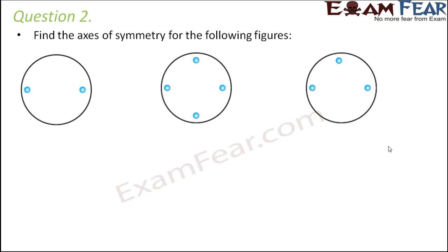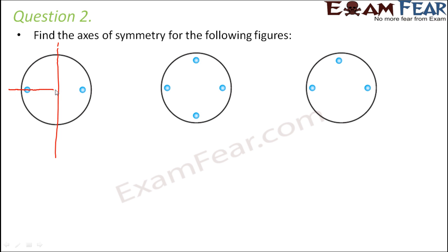Question number two: find the axis of symmetry. Note that some diagrams can have multiple lines of symmetry. For the first circle with two holes, one option is to draw a line through the center of the circle like a diameter, giving each half one hole. Another option is to draw a line passing through the centers of both holes, so each half contains half of each hole. These are the two possible axes of symmetry.